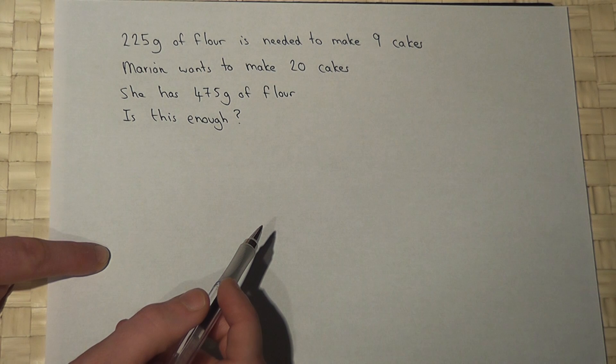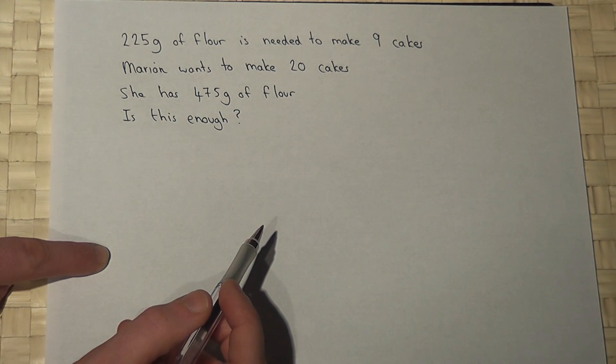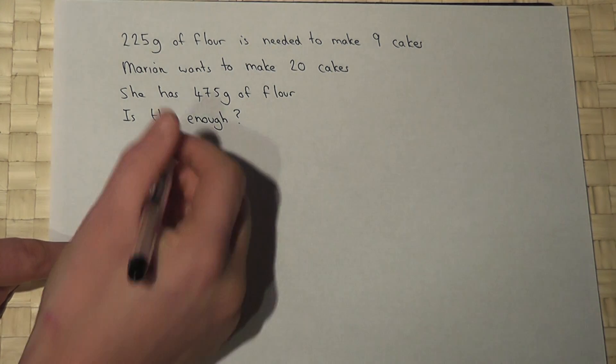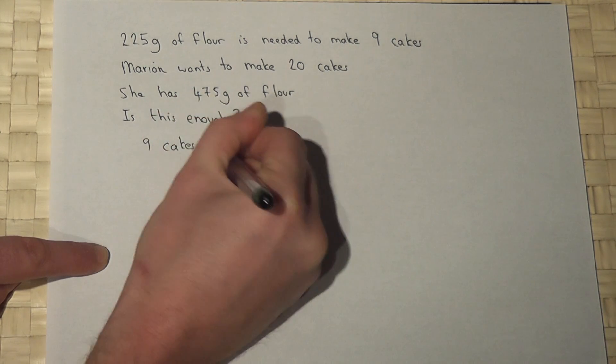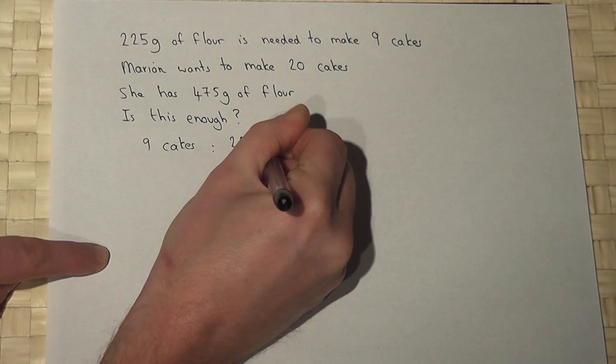Now the method here is to work out how much flour you would need to make 20 cakes. We know that nine cakes requires 225 grams of flour.